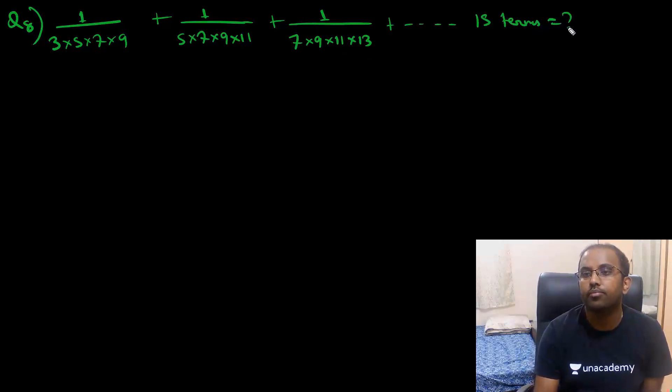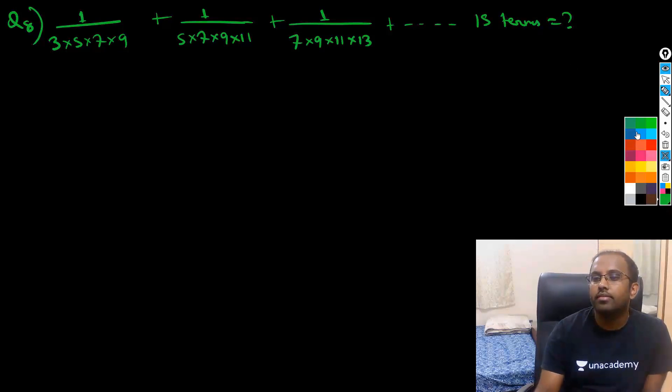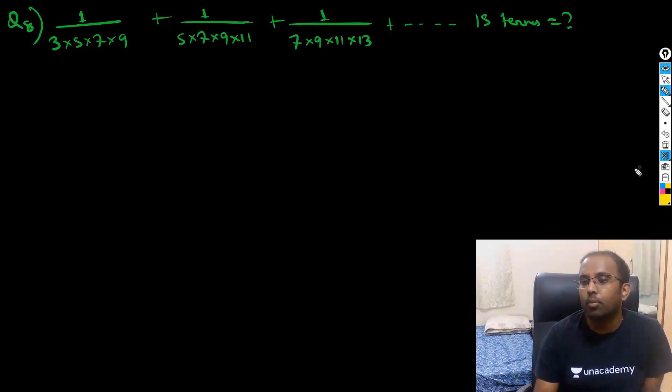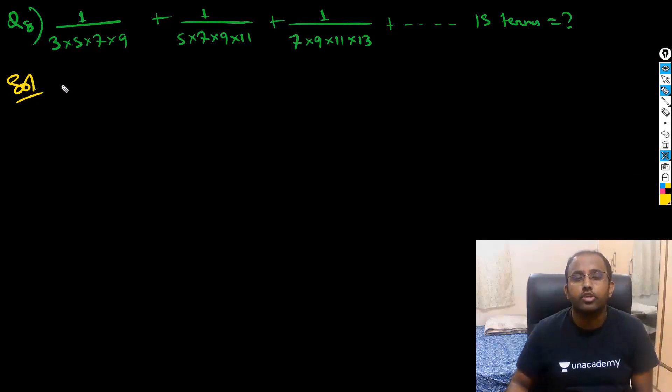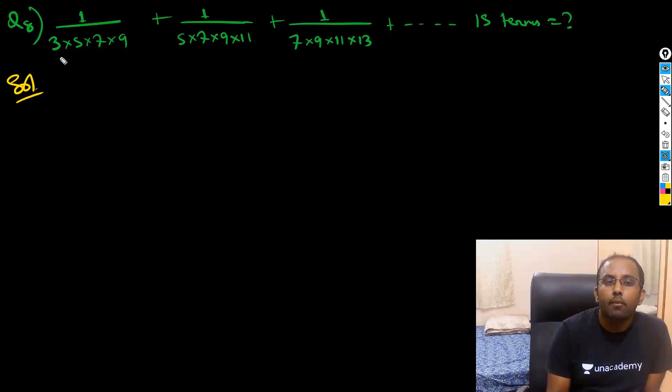So what is the value? This kind of series is known as telescopic series. So let me show you how this question can be formed. The gap will always be same here - the gap from 3 to 5 to 7 and so on.